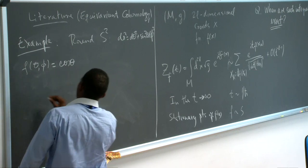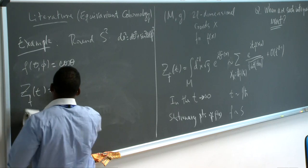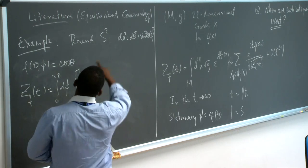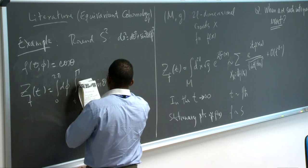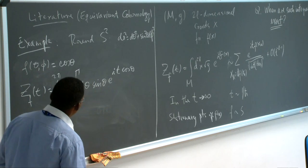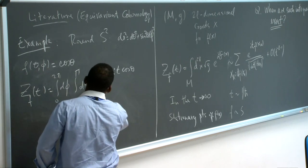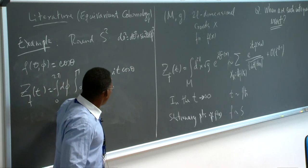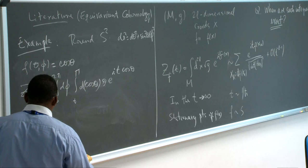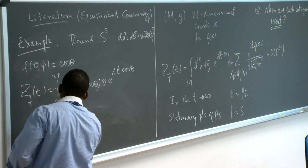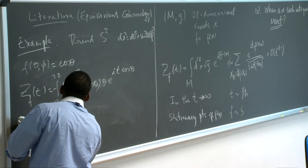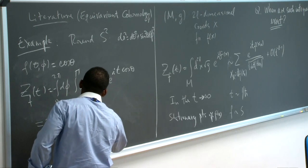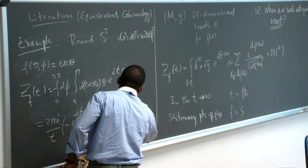In that case, my integral can be written as the integral from 0 to 2π dφ, times the integral from 0 to π dθ, with the square root of the determinant of the metric being sin θ, and then e^{it cosθ}. I can substitute d(cosθ) = −sinθ dθ, and this becomes a very simple integral. The answer is 2π × (i/t) × (−e^{it} + e^{−it}), which gives 4π sin(t)/t.